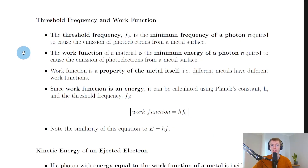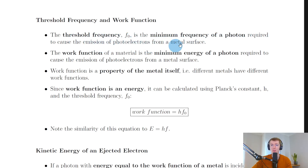Now here we're going to look at two important definitions for the photoelectric effect. The first one is threshold frequency. We say the threshold frequency f0 is the minimum frequency of a photon required to cause the emission of photoelectrons from a metal surface. This word 'threshold' suggests there is a limit — a minimum limit that the frequency of the incident photons must have in order to cause electrons to be ejected from the metal.